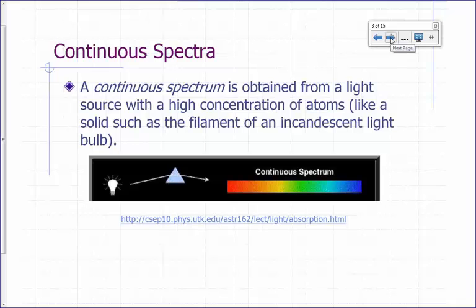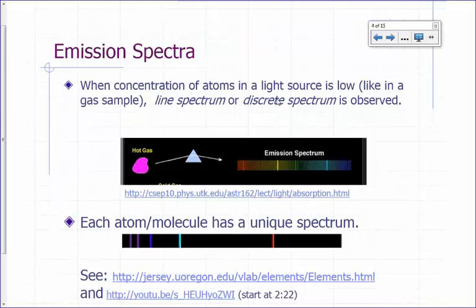Continuous as opposed to what you might get when the light source has a very low concentration of atoms. So for example, if you have a hot gas, so you remember in the gas, the atoms are relatively, significantly far away from each other on average.